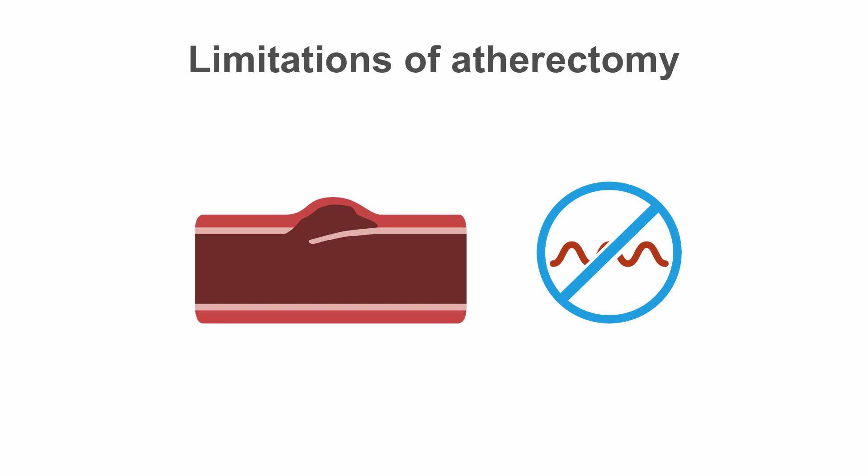Special lubricated stainless steel rotor wires are also needed for rotational atherectomy. This is due to the heat generated by the rotating burr. These can be difficult to use and are not as easy to insert into a coronary artery when compared with normal angioplasty wires.